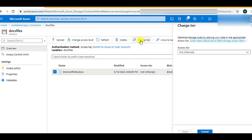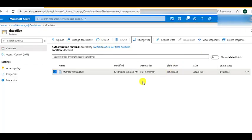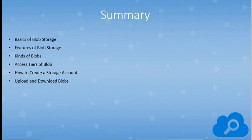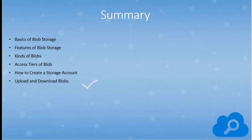You can also download the file from the right-hand panel, and you can also change the access tier from here. Uploading documents to Azure Blob Storage can be done in a variety of ways: first, via the portal as we have seen; second, using the az command from the CLI; and third, using .NET code. In this session, we have learned about the basics of blob storage, examined its features, the different kinds of blobs available, the access tiers, and we have created an Azure storage account and learned how to upload and download files in Azure Blob Storage.